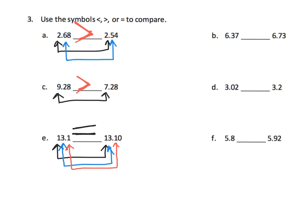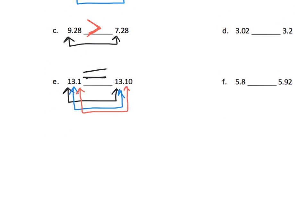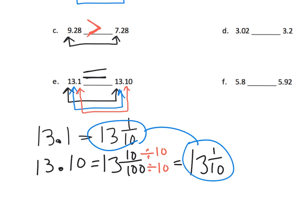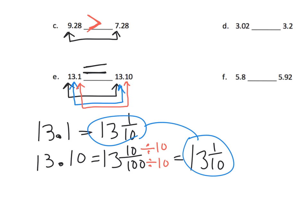So what does that tell us about these two numbers? It tells us they are equal. Another way we could think of that: 13.11 is the same as 13 and one tenth... wait, 13.10 is the same as 13 and ten hundredths. If we divide both the numerator and denominator by ten, we get 13 and one tenth — the exact same answer.